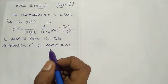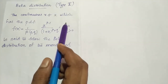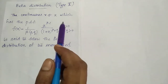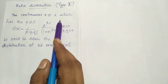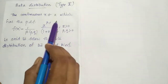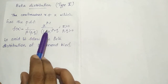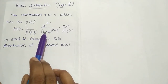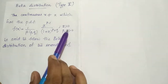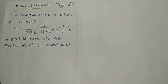Hi friends, in another video we will discuss the beta distribution type 2. In the previous video, we discussed the type 1 beta distribution. Now, type 2 beta distribution, or beta distribution of the second kind: the continuous random variable x has the PDF f(x) = (1/β(p,q)) · x^(p-1) · (1+x)^(-(p+q)), where x > 0 and p, q > 0.